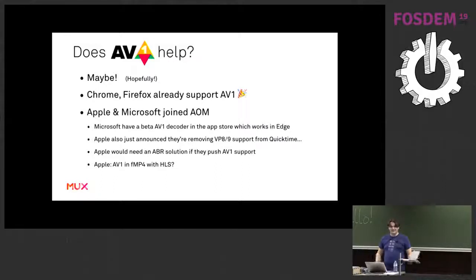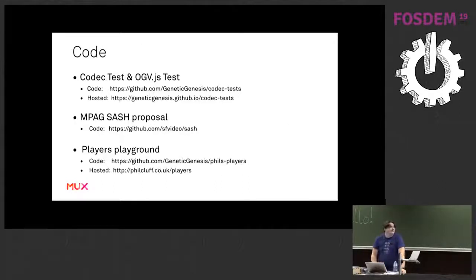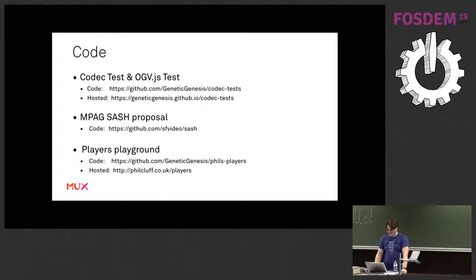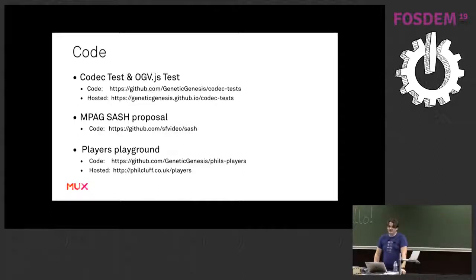All the code I demonstrated - the codec test and everything - you can run it yourself. There's a hosted version and also the code on GitHub. If you're interested in talking more about the MPAG-SASH proposal, it's on GitHub as well - you can read it there and tell me how much of a terrible idea it is and how I'm going to get sued by MPEG. And there's also a players playground with the two players I mentioned, plus a bunch of other players you can try your manifests with.